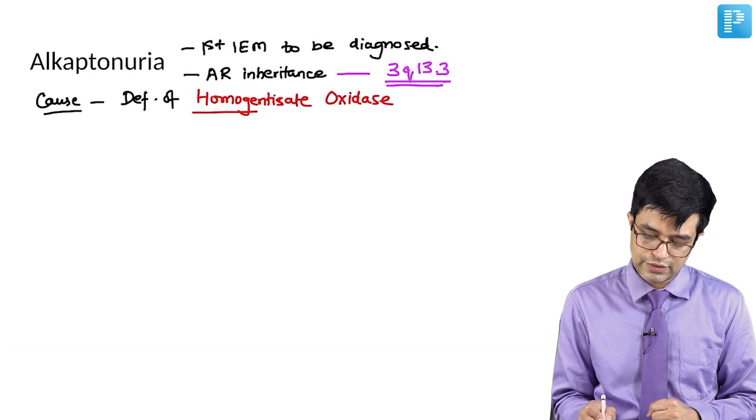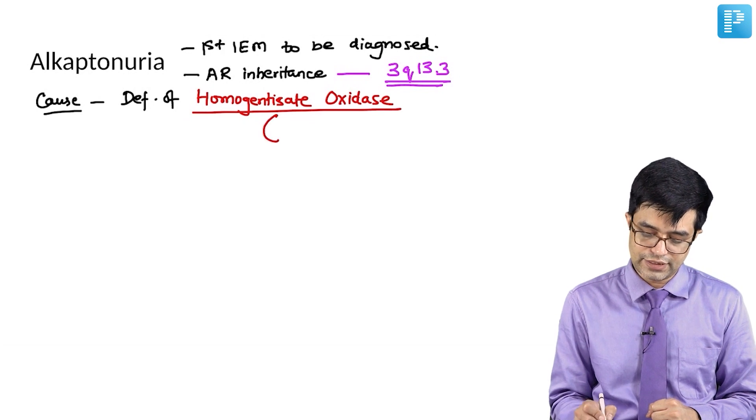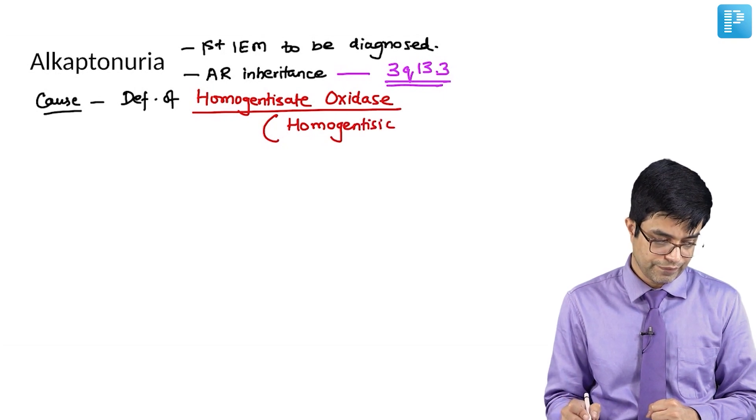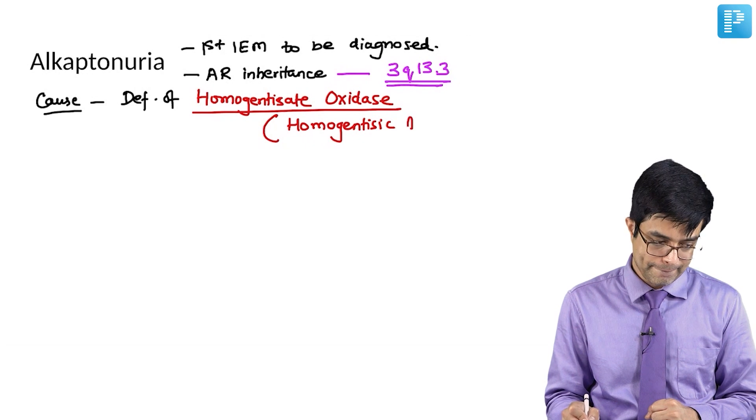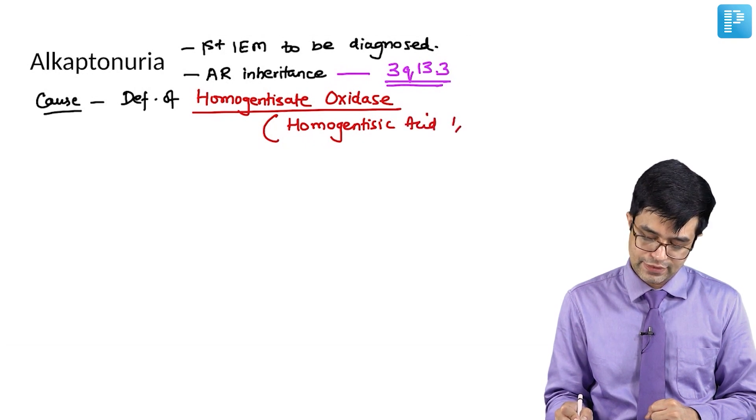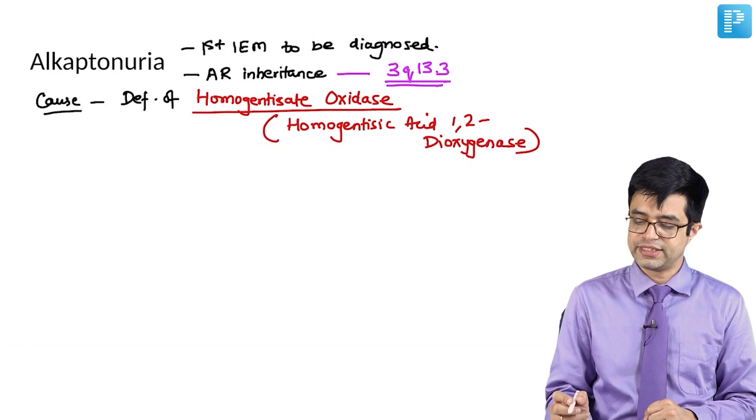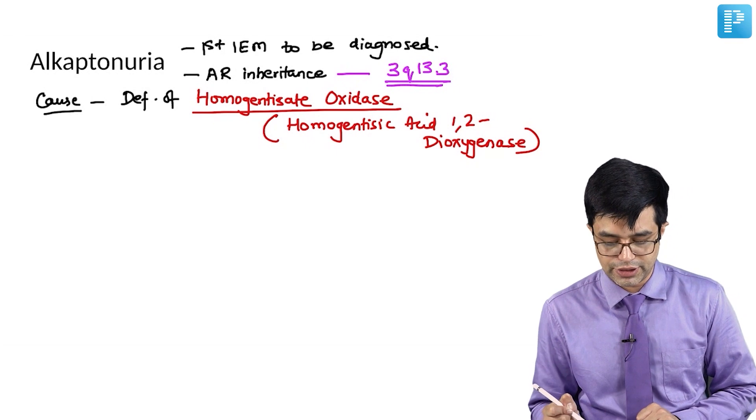The other name for homogentisate oxidase is homogentisic acid 1,2-dioxygenase.